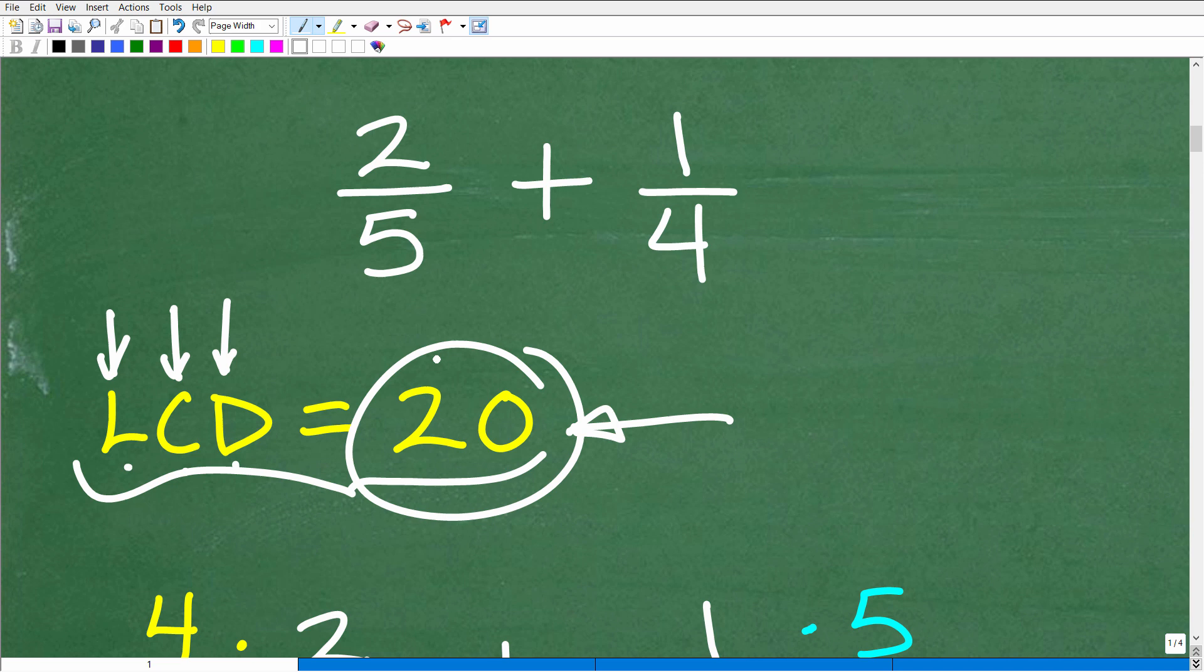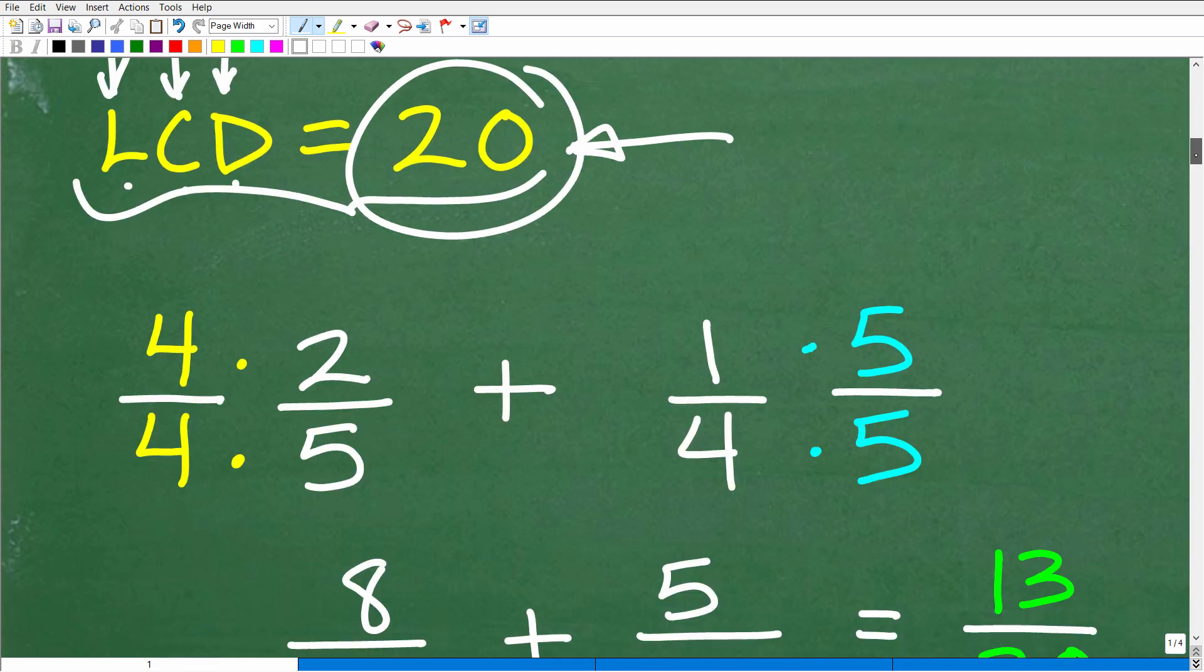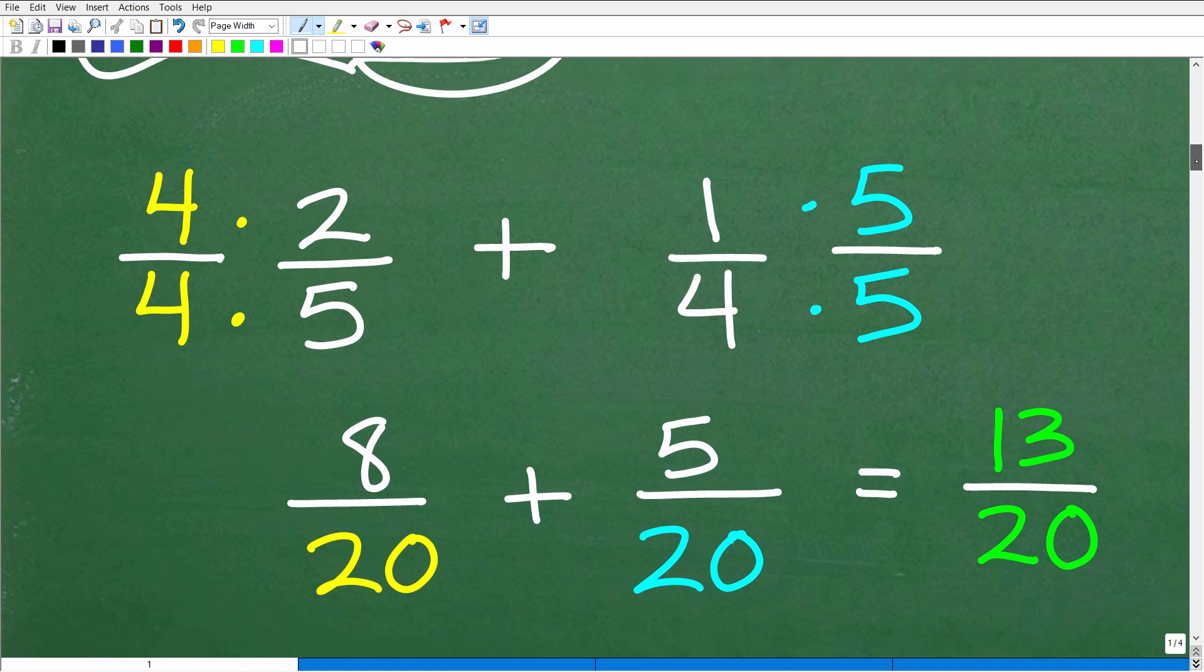Okay, so let's suppose you already know, oh yes, the LCD is 20. Perfect. What do we need to do next? Well, what we have to do is take each one of these fractions, 2/5 and 1/4, and rewrite them such that they have the actual common denominator, the lowest common denominator, which is 20.